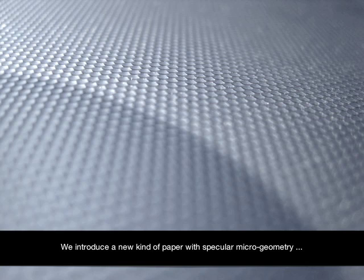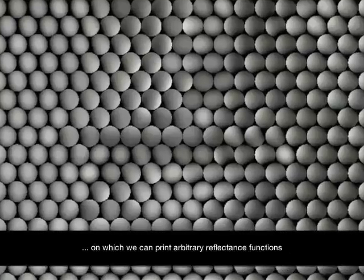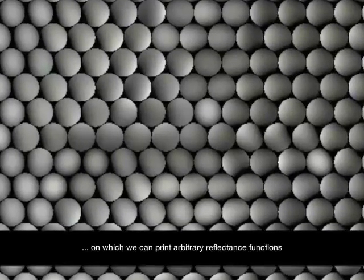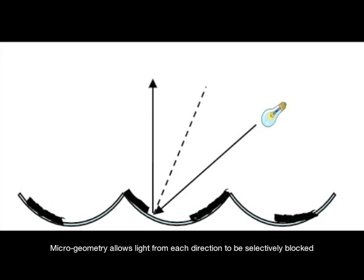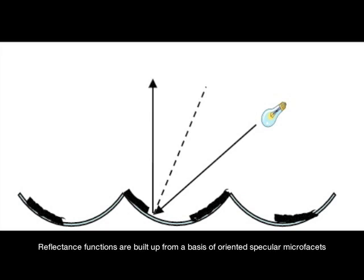We introduce a new kind of paper with specular microgeometry, on which we can print arbitrary reflectance functions. Microgeometry allows light from each direction to be selectively blocked. Reflectance functions are built up from a basis of oriented specular microfacets.